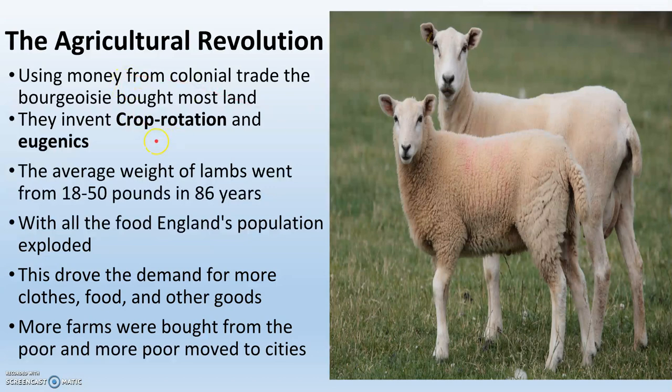Two inventions specifically make a huge difference: crop rotation and eugenics. Crop rotation is the idea that we're going to plant a different crop in a different field every year, so that nutrients get returned to the soil and you have huge harvests every year. Eugenics is the idea that we're going to breed the biggest, strongest animals with the biggest, strongest animals to make really, really big, strong animals.